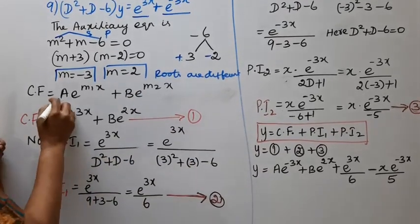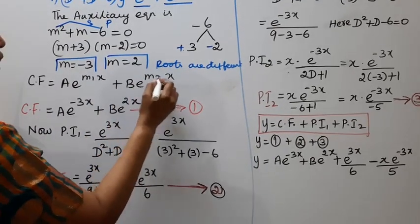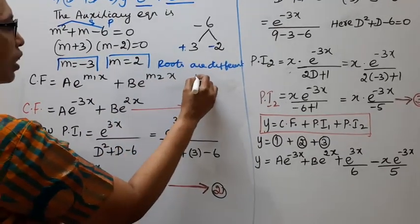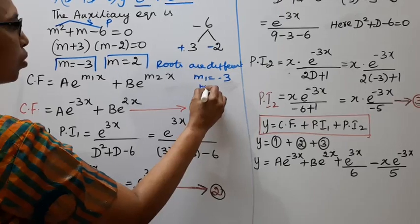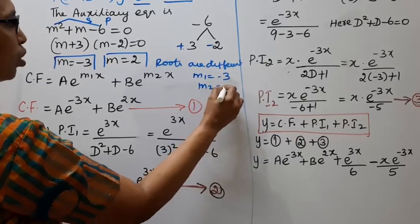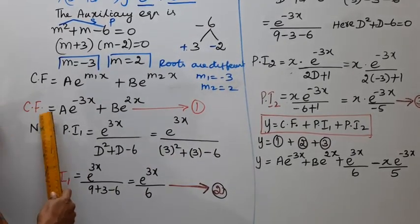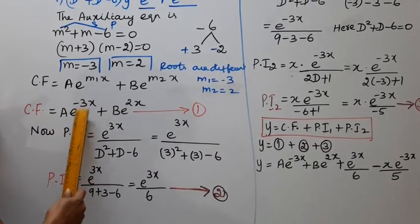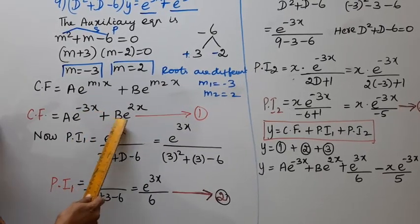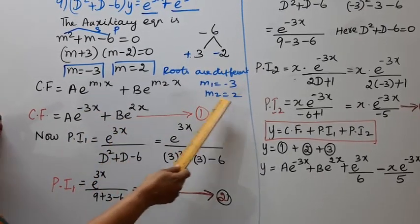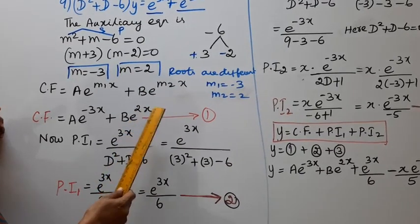Since the roots are different, the complementary function is ae^(m1·x) + be^(m2·x), where m1 = −3 and m2 = 2. Therefore the complementary function is ae^(−3x) + be^(2x).